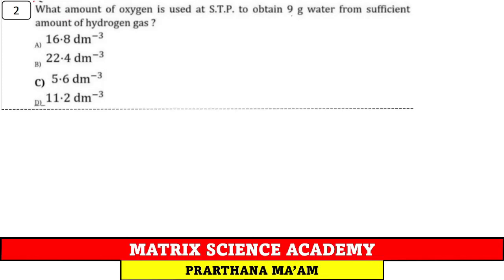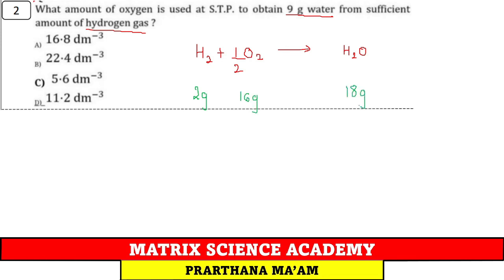Question 2: What amount of oxygen is used to obtain 9 gram of water from sufficient hydrogen gas? Reaction: H₂ + ½O₂ → H₂O. 18 g water requires 16 g oxygen. For 9 g water: oxygen needed = 8 g. Converting: 32 g O₂ = 1 mole = 22.4 L, so 8 g O₂ = 8 × 22.4 / 32 = 5.6 L. Option C.